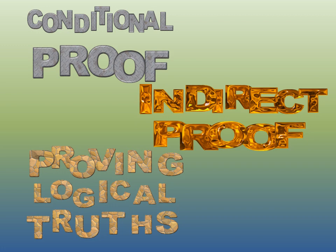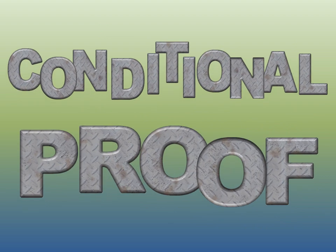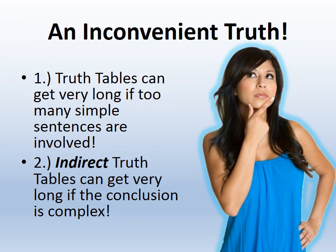If you master conditional and indirect proofs, you should be able to prove logical truths very easily. Let's begin with the conditional proof, a very common technique used in a lot of logic textbooks. Earlier we saw two inconvenient truths: truth tables can get very long — hopelessly long — if too many simple sentences are involved. And if you try indirect truth tables, that can be very confusing and complex if your conclusion is complex. They're not very efficient under those conditions.